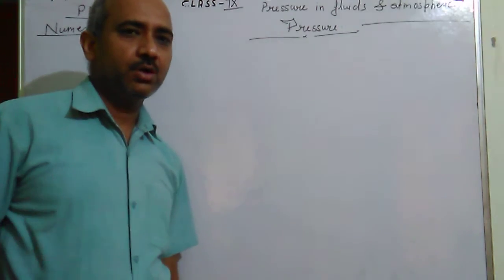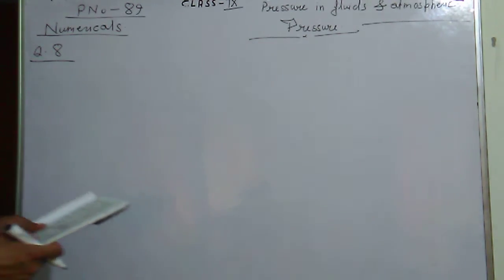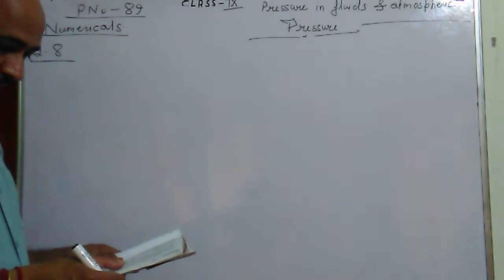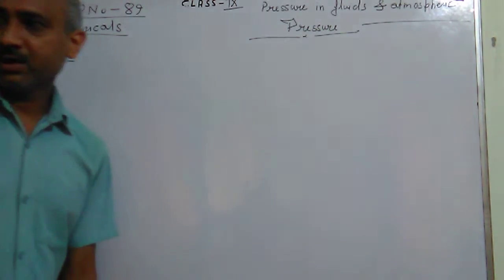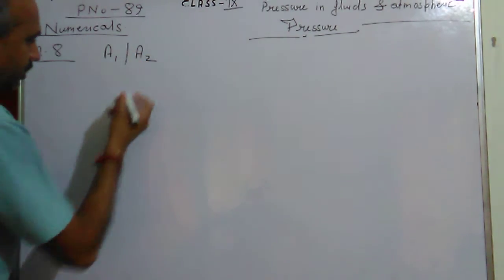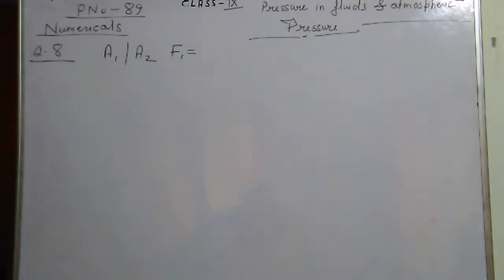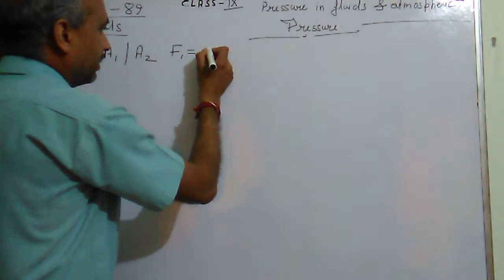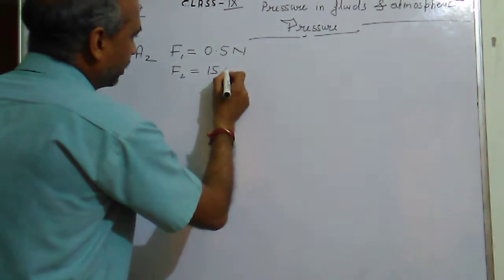So I am starting from question number 8. Question number 8 says: what should be the ratio of the area of cross-section of the master cylinder and the wheel cylinder of hydraulic brakes, so that a force of 15 Newton can be obtained at each of its brake shoes by exerting a force of 0.5 Newton? We have to find the ratio between A1 and A2. F1 is 0.5 Newton and F2 is 15 Newton.